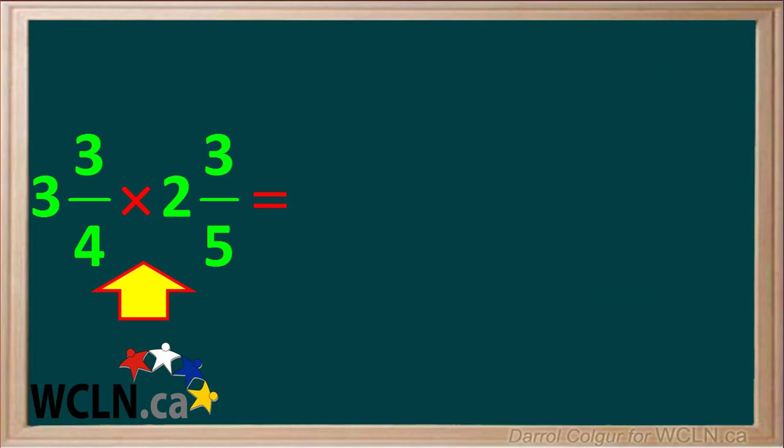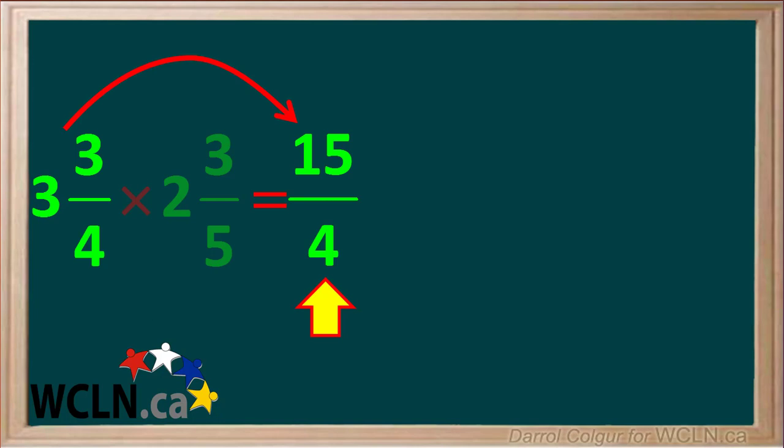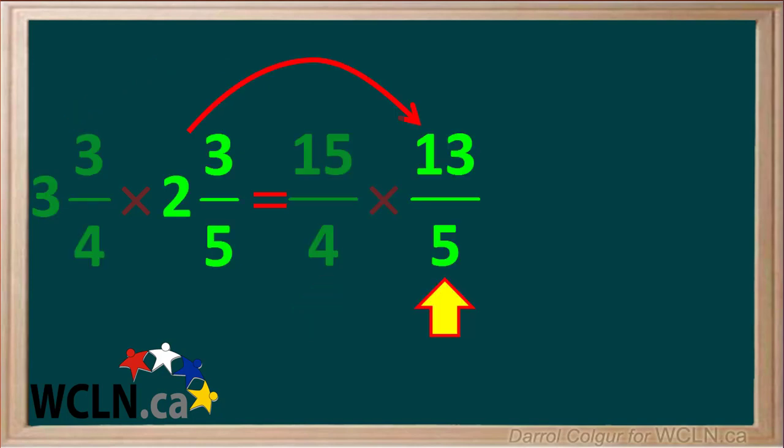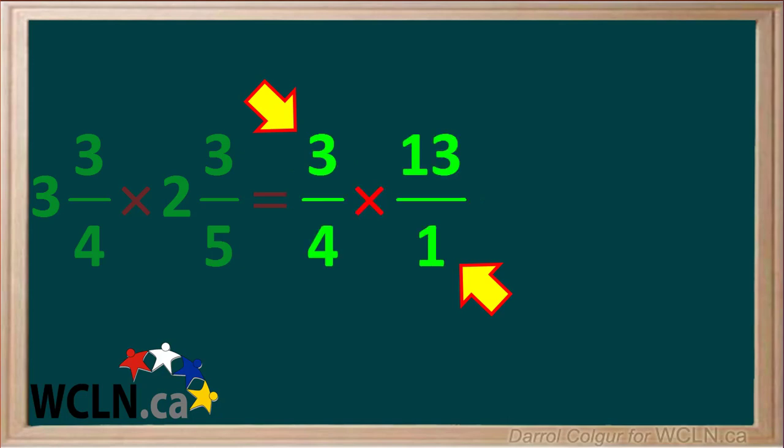We take the two mixed numbers we're multiplying and convert them to improper fractions. 3 times 4 equals 12 plus 3 comes out to 15 quarters. And the second one, 2 times 5 equals 10 plus 3 is equal to 13 fifths. The 15 and the 5 can both be divided by 5 to give us 3 and 1. So our fractions are now 3 quarters times 13 over 1.